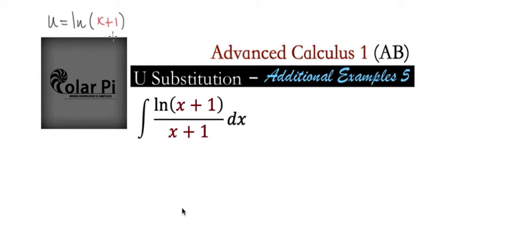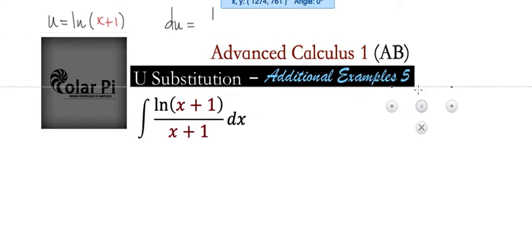and so that is this numerator in our integrand. Okay, then it must follow that du is equal to 1 over x plus 1 times dx